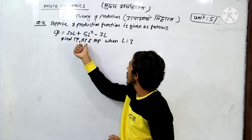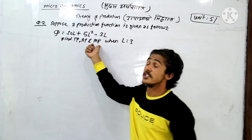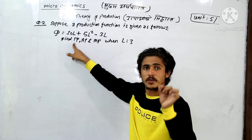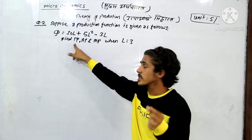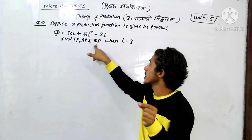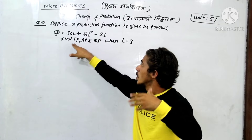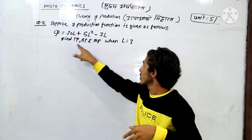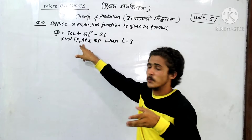Find TP, AP, and MP. TP is equal to total product, AP is average product, and MP is marginal product.